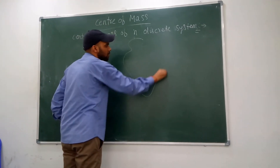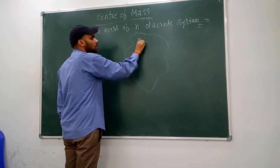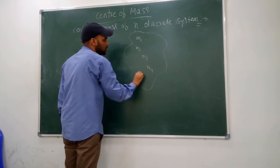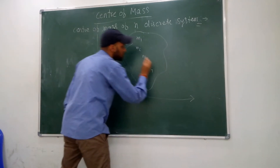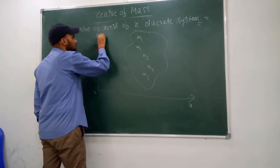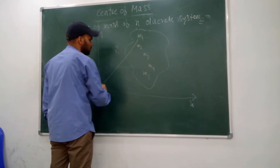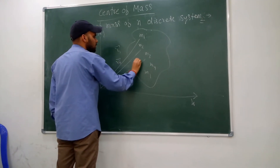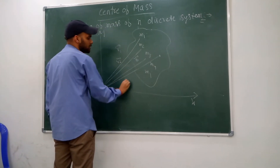Suppose you are going to find the center of mass of any rigid system. If it contains N number of particles — M1, M2, M3, M4, up to MN — then the position vector of M1 is R1, position vector of M2 particle is R2, position vector of M3 particle is R3, and the position of the center of mass where the whole mass is supposed to be concentrated is RCM.